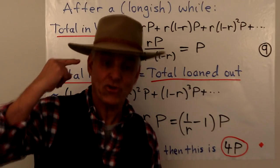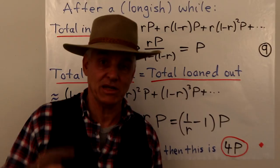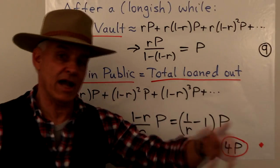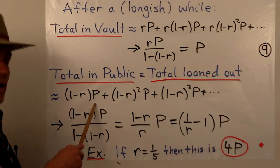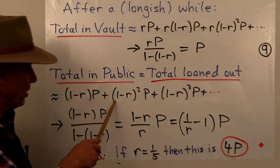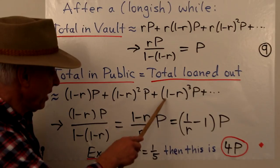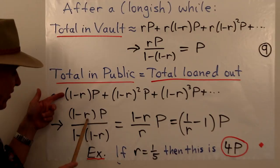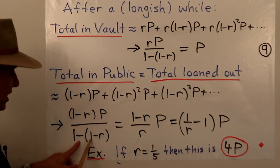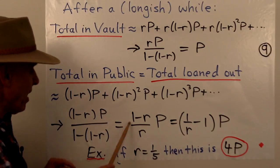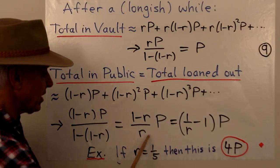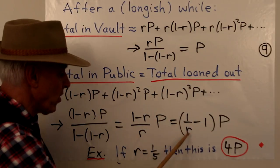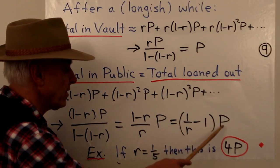What about the total amount of loans I've lent out altogether? The first fellow got one minus R times P, the next got one minus R squared times P, then one minus R cubed times P — another geometric series. The first term is one minus R times P, common ratio is one minus R, so we get one minus R divided by R times P, which we can write as one over R minus one times P. With R equal to 0.2 or one-fifth, one over R is five, five minus one is four, so the total amount I end up loaning out is four times P — four hundred dollars.